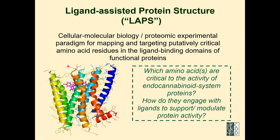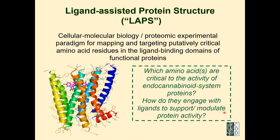So we developed a method in-house called Ligand Assisted Protein Structure, or LAPS. We cut the extracellular and intracellular loops to simplify the view. We knew these compounds operated inside the cell membrane, and the question was where exactly. LAPS is still a very useful method that tells us which amino acids are critical for the activity of endocannabinoid system proteins.